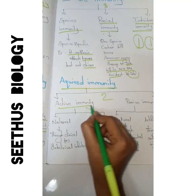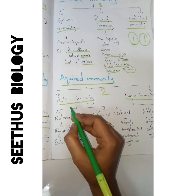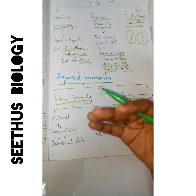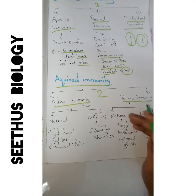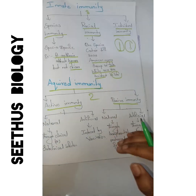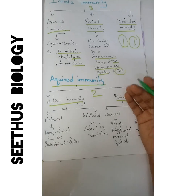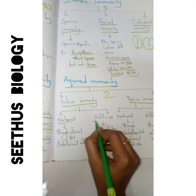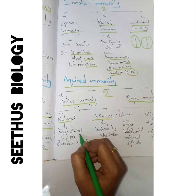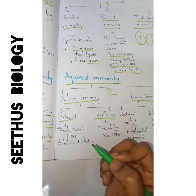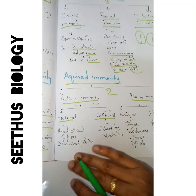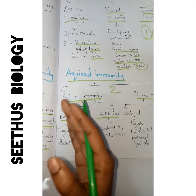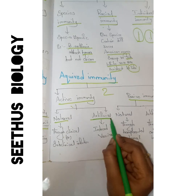Acquired immunity is classified into two types: active immunity and passive immunity. Active immunity means the immunity is built up within the host's own body. Passive immunity means we are injecting immunity from an artificial source into the human body. Active immunity is further split into natural and artificial types. Through any clinical or subclinical infection, when a foreign antigen enters the body, the immune system is activated and produces antibodies — that is natural active immunity.